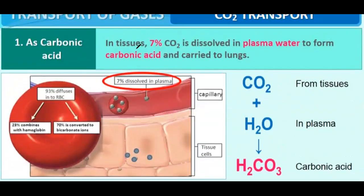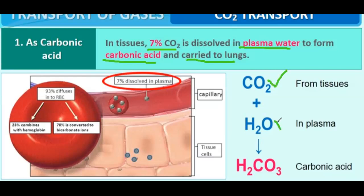As carbonic acid: in tissues, 7% of CO2 is dissolved in plasma water to form carbonic acid and carried to the lungs. Carbon dioxide present in tissues combines with water present in plasma to form carbonic acid, which is then transported. For comparison, only 3% of oxygen is transported with the help of plasma.